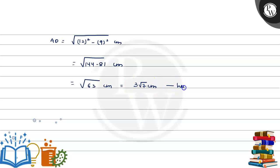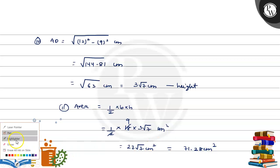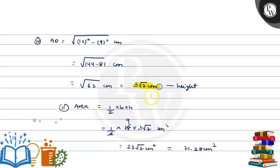This is the value of the height, which is the answer for part three. Now we can easily find the area. Area is equal to 1 by 2 into base into height, so 1 by 2 into 18 into 3 root 7, which equals 27 root 7 centimeter square. This is also equal to 71.28 centimeter square. So the answer for part three is 3 root 7 centimeter and the area is 71.28 centimeter square. Hope you understand it well, thank you.